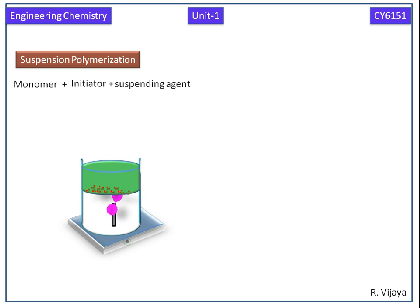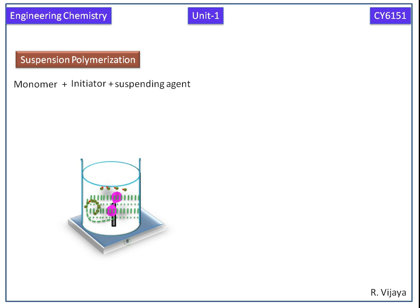The whole mixture is agitated at constant temperature. Now we can see the initiation and propagation steps. At last, termination takes place, and we get bits of polymers.